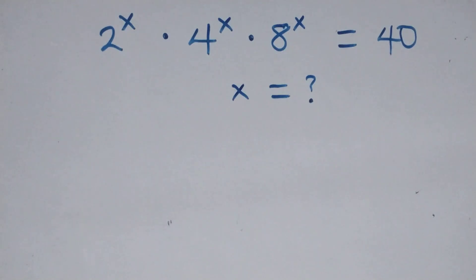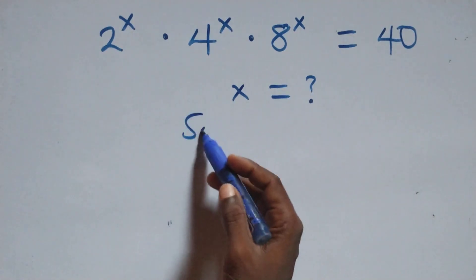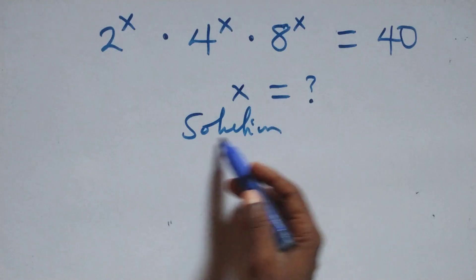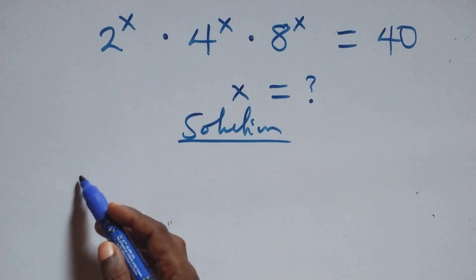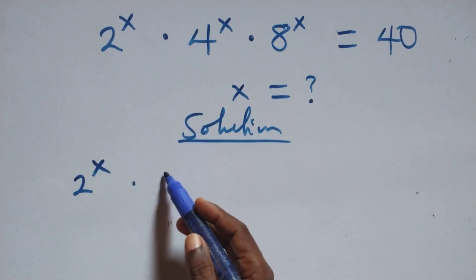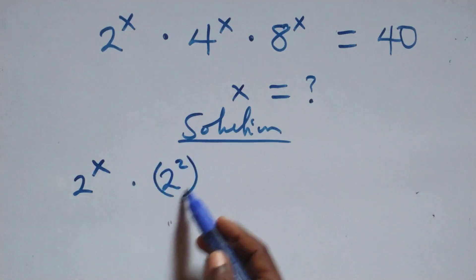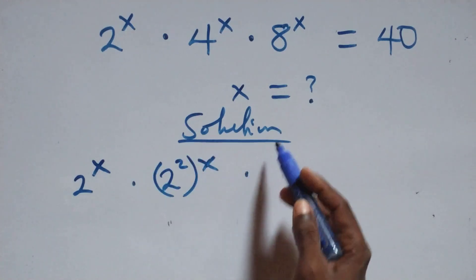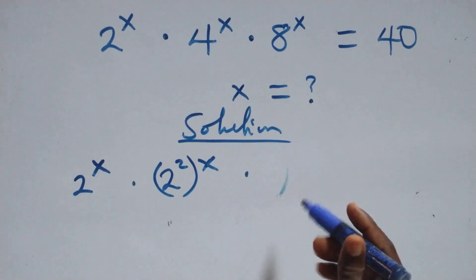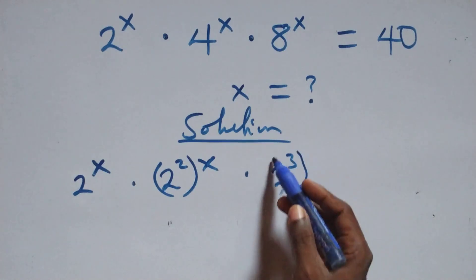Hello, you're welcome. How to solve this nice exponential equation. From what we have here, we can write this as 2 raised to power x, times 4 also as 2 squared which is raised to power x, then times 8 as 2 cubed which is also raised to power x.